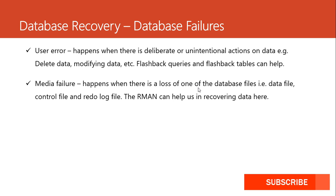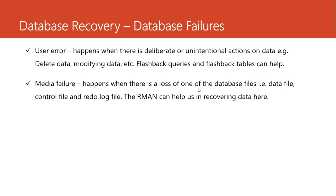Finally, we have what we call the media failure. Media failure happens whenever there is a loss of one or more database files — the data file, the control file, and the redo log file. Whenever a problem happens to one of these three files, we face what we call a media failure. We are going to see how we can recover from one or two of these — we are going to simulate a failure and see how we can recover from it.